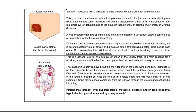For double barrel stoma, when the cecum is removed, the surgeon might create a double barrel stoma. In essence, this is an end ileostomy and a mucous fistula sited beside each other. On examination, this will look almost identical to a loop ileostomy; however, closer inspection will show two separate stomas.